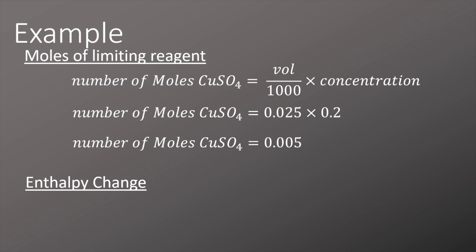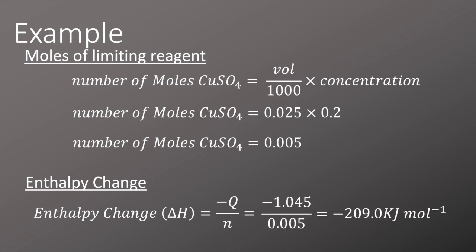The last step for us to do is calculate the enthalpy change, and for the enthalpy change we'll take the minus Q over n equation we talked about previously. We'll put the numbers in so we have minus 1.045 divided by 0.005 equals minus 209.0 kilojoules per mole. Don't forget to put the units on the end.